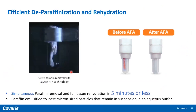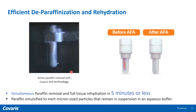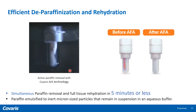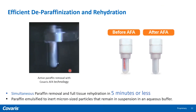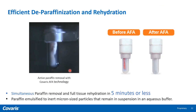In this video, you will notice how quickly AFA deparaffinizes and rehydrates FFPE samples. The FFPE samples are loaded onto glass microtubes and then subjected to AFA on Covaris's instrument. In less than five minutes, paraffin is emulsified into inert micron-sized particles that remain in aqueous solution, while the tissue is simultaneously rehydrated. The key advantage of using AFA is its highly effective, fast, hands-free paraffin removal. The combination is more effective than chemical and solvent-based methods such as xylene, and helps to reduce variability in sample processing with a simplified and standardized workflow.